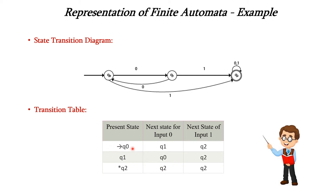For Q0 with input 0, it goes to Q1. For Q0 with input 1, it goes to Q2. For Q1 with input 0, it goes to Q0, and for input 1 it goes to Q2. For Q2, for input 0 it goes to Q2, and for input 1 it also goes to Q2. This is the state transition diagram and transition table for finite automata.